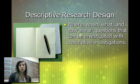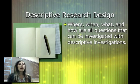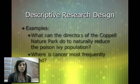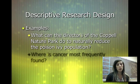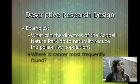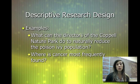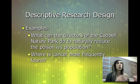In descriptive research design we look at the where, the when, the what, and the how. For example: what can the directors of the Coppell Nature Park do to naturally reduce the poison ivy population? Or, where is cancer most frequently found? You can still get qualitative or quantitative information, but you're not actually going to these areas — you're just doing research and discovering the answer.